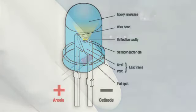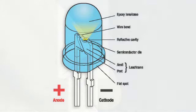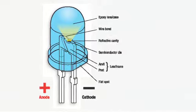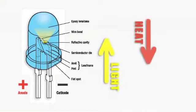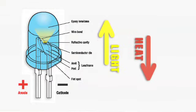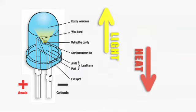At the junction, higher energy electrons fill lower energy holes in the atomic structure of the cathode material. Light and heat are produced. Light is reflected upward. Heat is conveyed downward to a heat sink where it is dissipated.